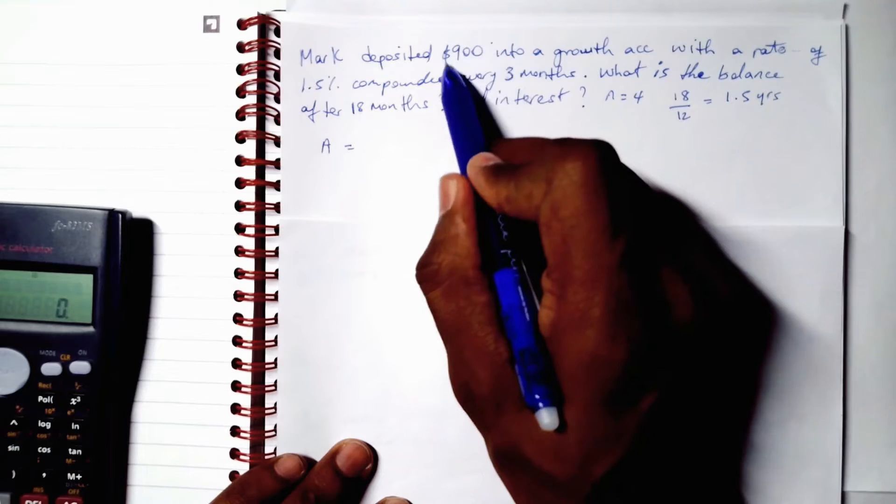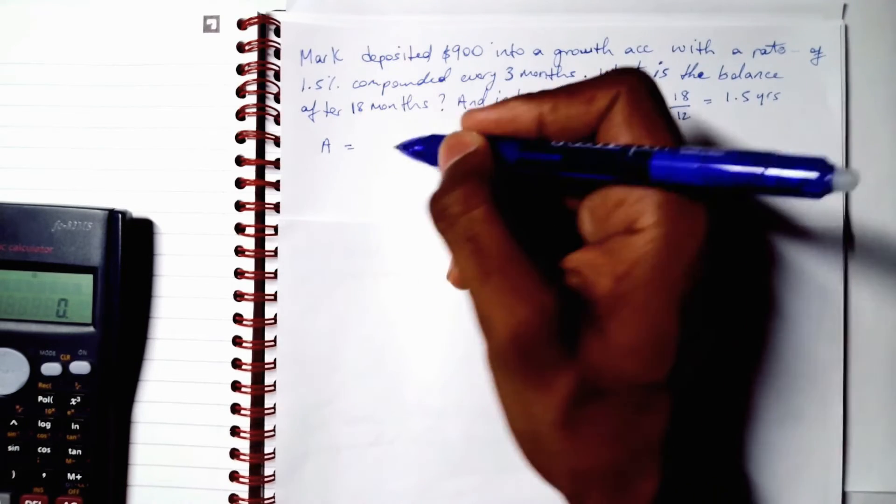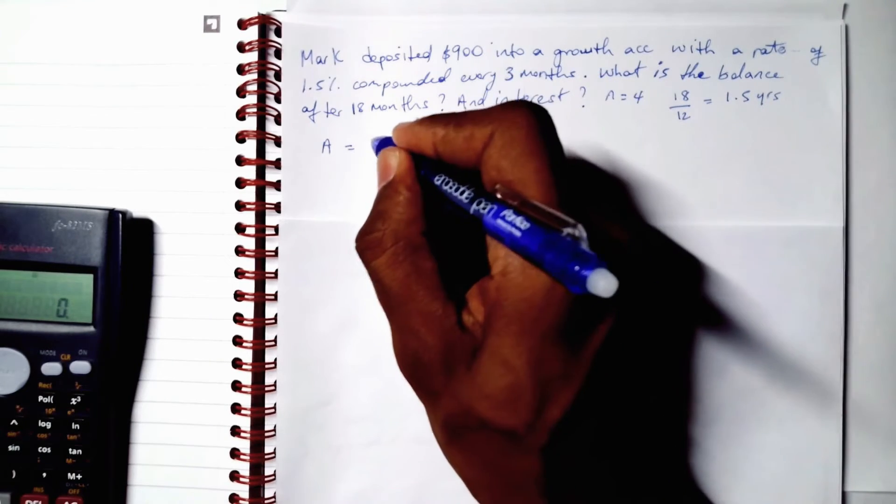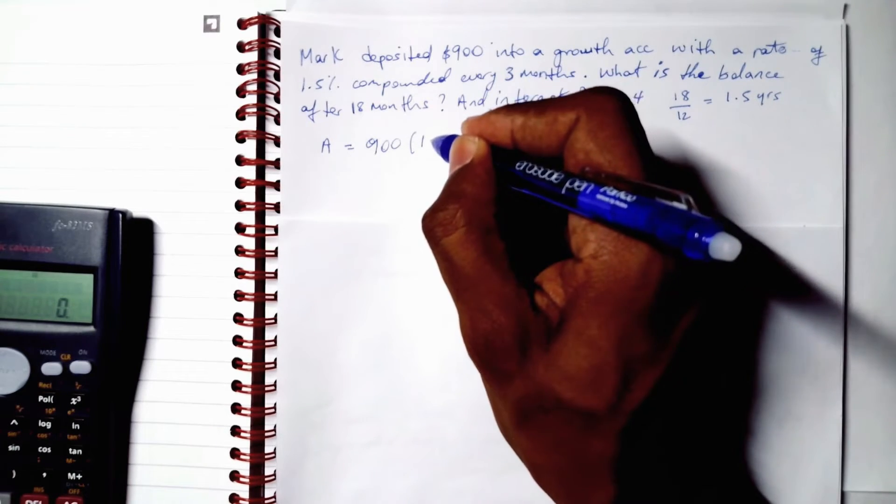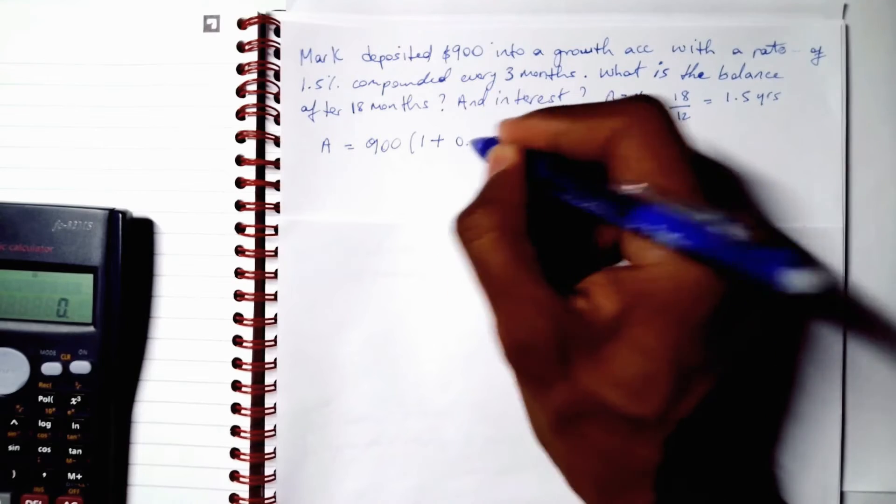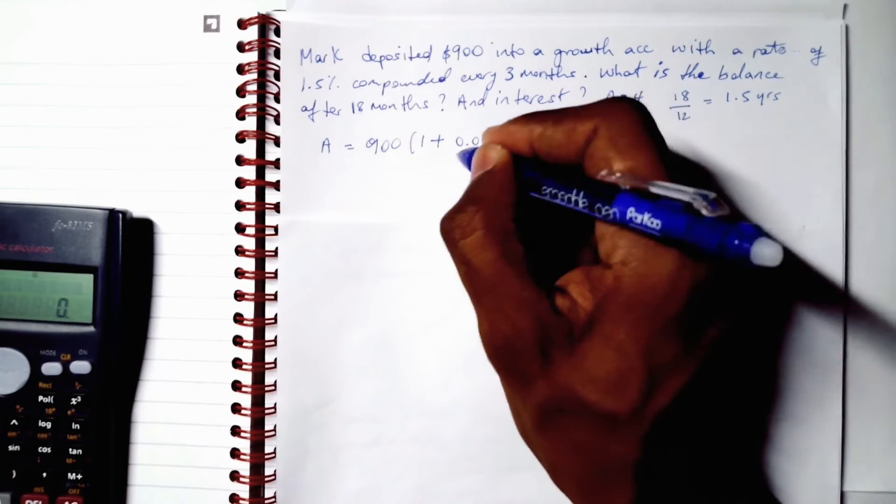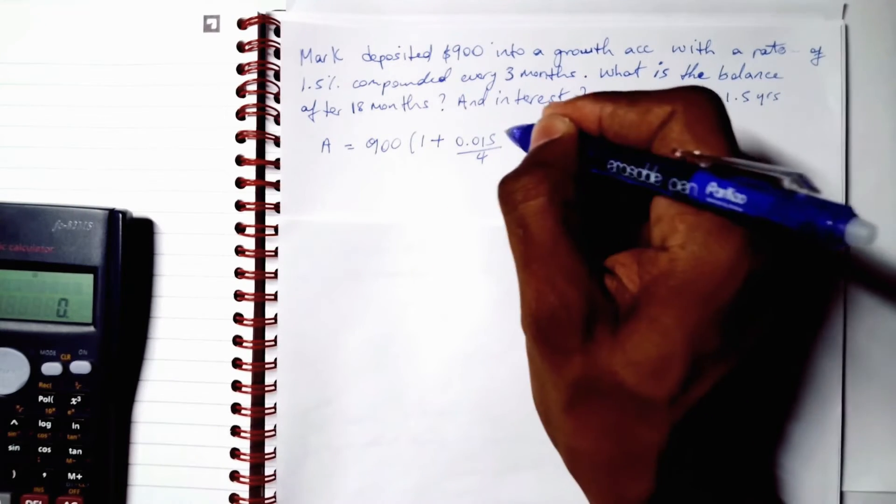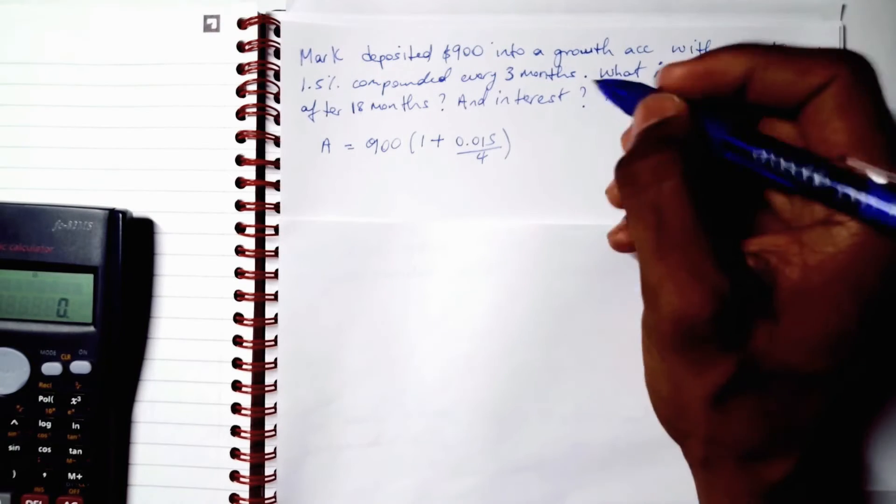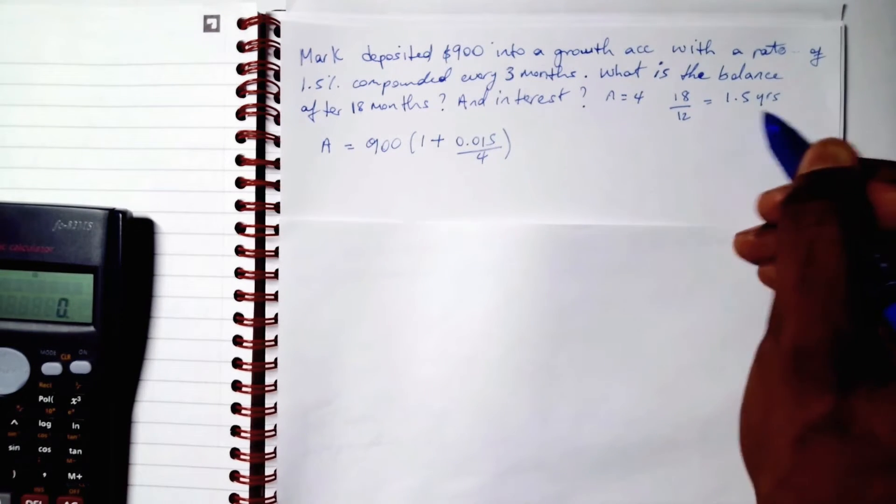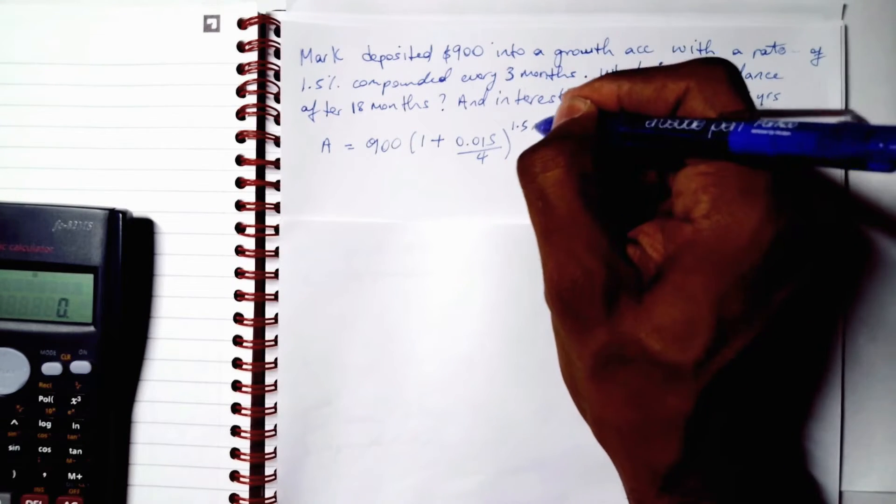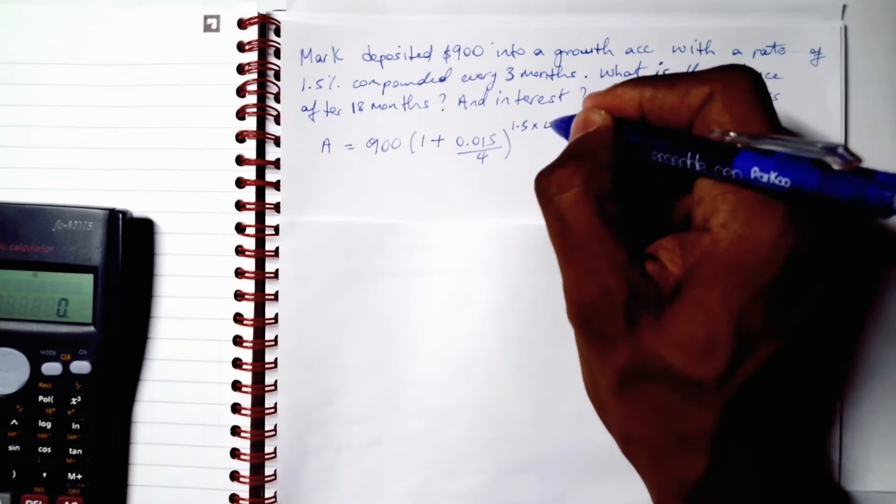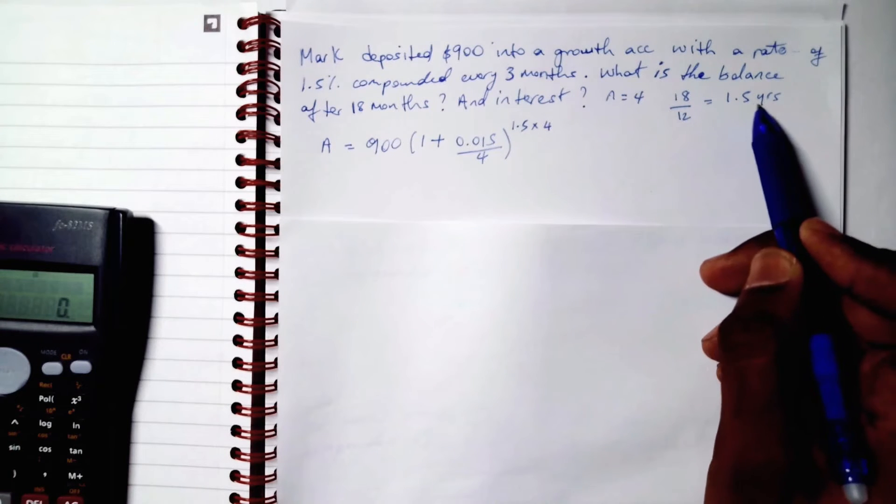A is going to be 900 is our P. 900 multiplied by 1 plus 0.015 divided by 4 raised to the power of 1.5. 1.5. 1.5 multiplied by 4.